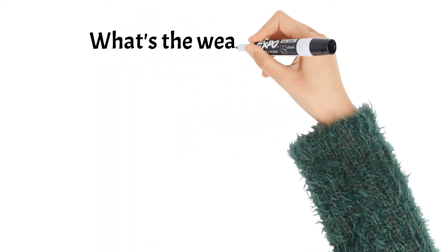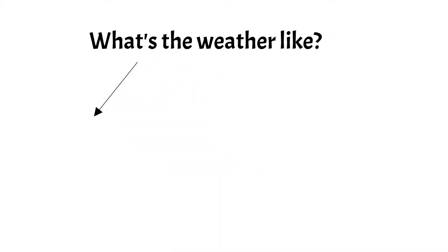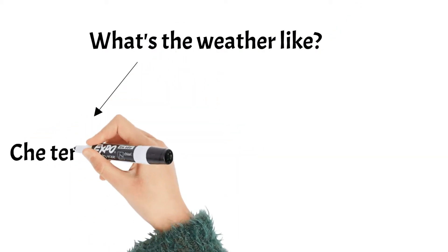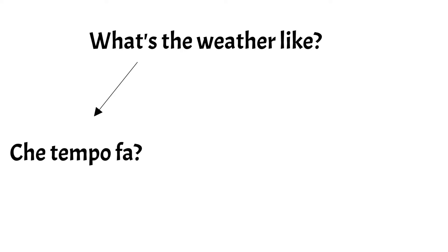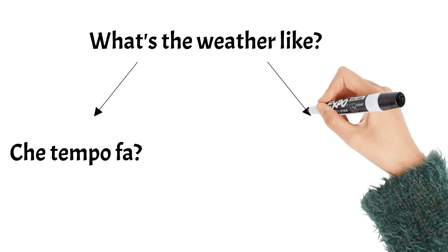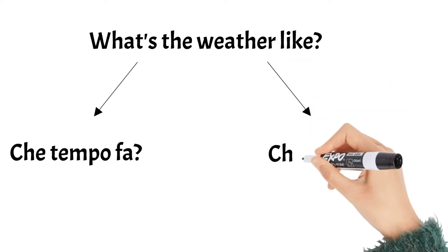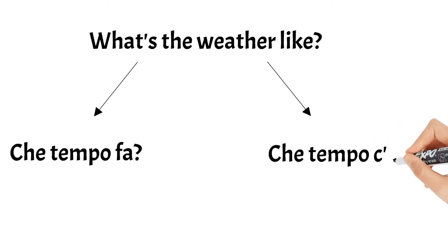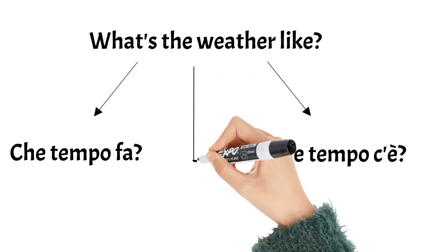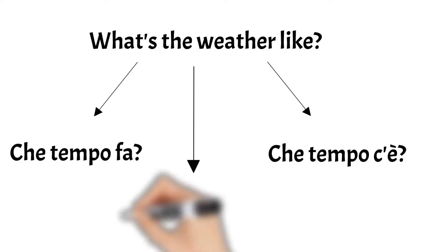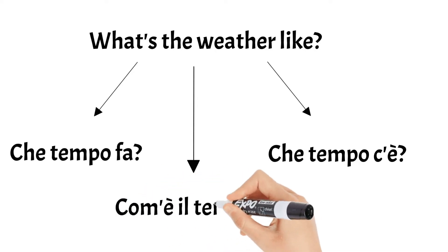The first thing we need to know is how to ask 'what's the weather like today' or 'how's the weather.' Let's have a look at the three possible ways to ask that. The first one: che tempo fa? The second one: che tempo c'è? The third one, and the one I use the most: Com'è il tempo?